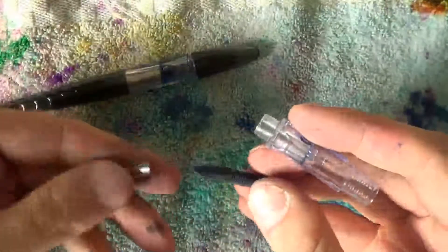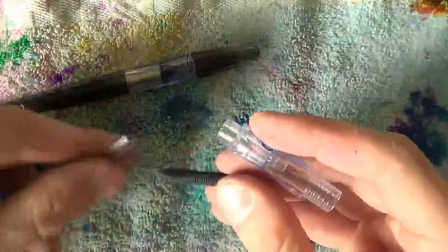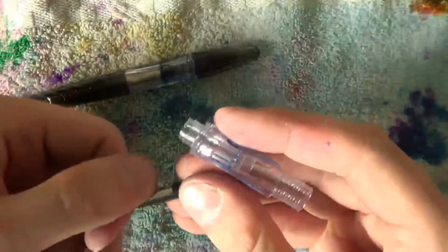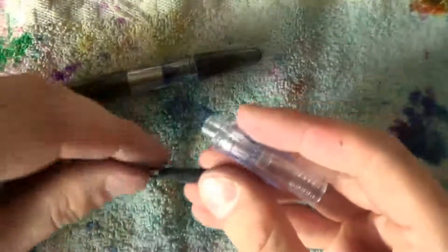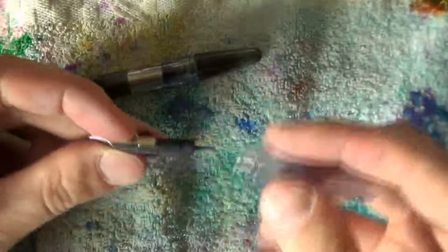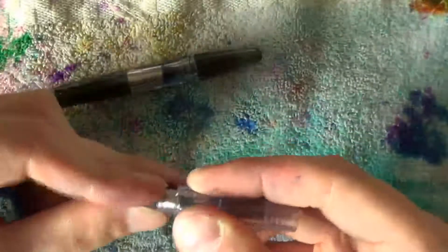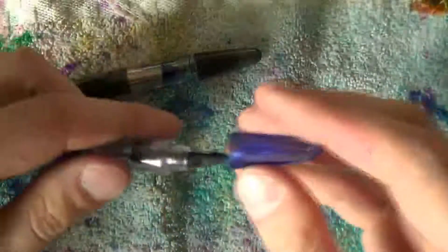Pluminix, same thing. Nib and feed slide off. When you are ready, note how they slot back in place again. Slide them back into the section. Screw the barrel back in place. Cap the pen.